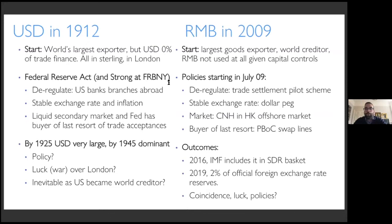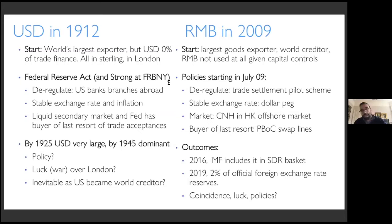Salim and I were looking at China and what's happened to the Renminbi. Here is a very brief story of the Renminbi over the last 11 years. In 2009, China was the largest goods exporter and already a large world creditor, yet its currency was not used at all — because given capital controls, you really couldn't use it. But starting in July 2009, the Chinese government, especially the People's Bank of China, started adopting a series of policies. They purposely parallel the ones the Federal Reserve did in the 1910s.